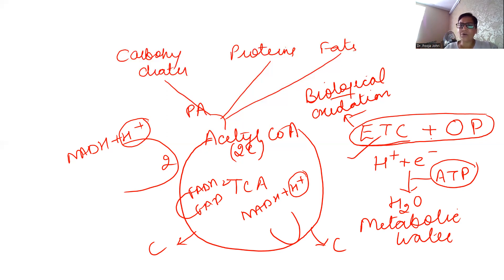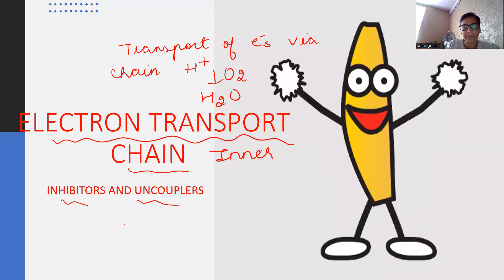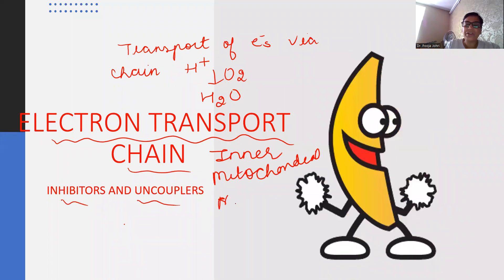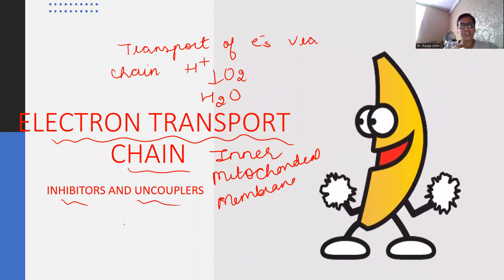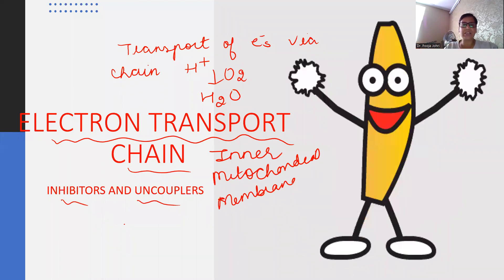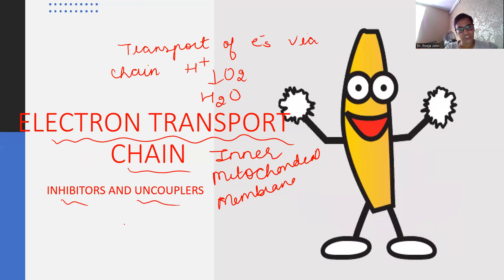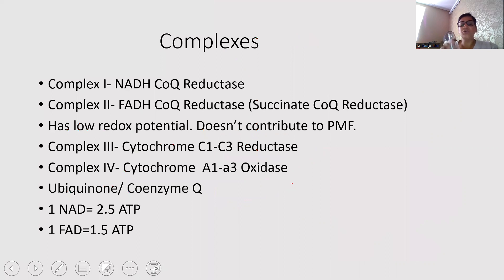Before starting any process in biochemistry, you should know the site where it occurs. Always remember: the electron transport chain occurs at the inner mitochondrial membrane, and the TCA cycle occurs in the matrix of mitochondria. So wherever dehydrogenation reactions take place and protons are given out, they will be transferred via this electron transport chain. The electron transport chain consists of four major complexes.